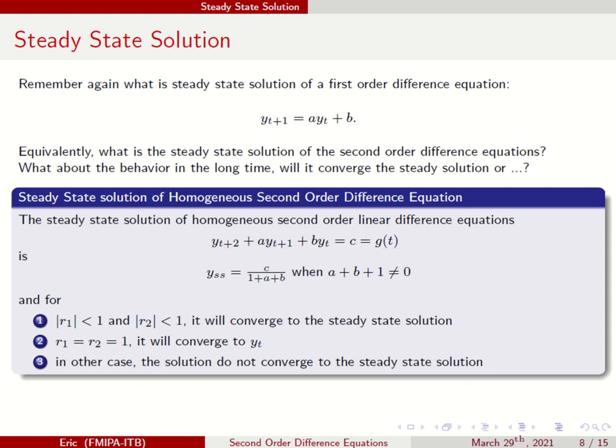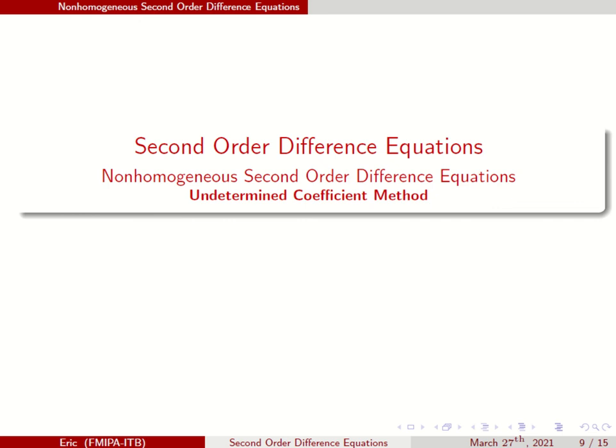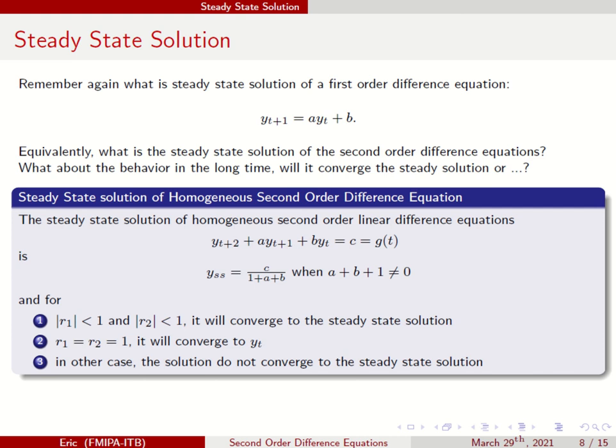Next, we'll discuss non-homogeneous second order difference equations. Previously, we covered the case where g(t) is just a constant. But what if g(t) is not constant—perhaps an exponential function or polynomial? For this, we use the undetermined coefficient method, which we'll cover in the next session. Thank you.